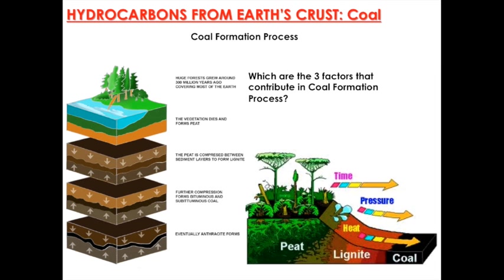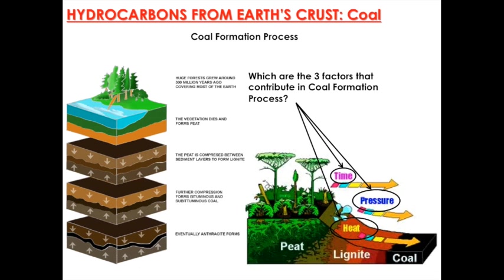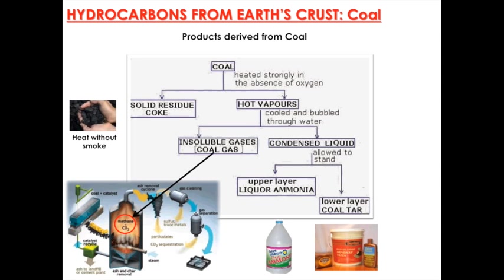Now let's turn to coal. The three factors that contribute to coal formation are heat, pressure, and time. Products derived from coal: coal can have solid residues called coke, or hot vapors. From the hot vapors you can have insoluble gases like coal gas, or condensed liquids like liquid ammonia and coal tar.